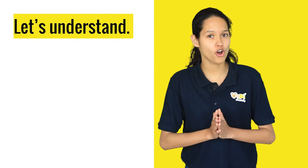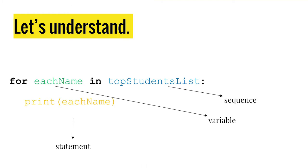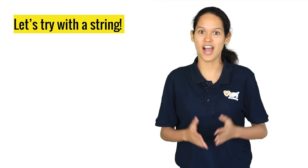A for loop starts with the word 'for', the variable name, 'in', and the sequence name, followed by a colon. And in the next line, the indentation follows any statement.